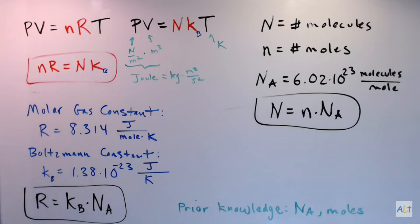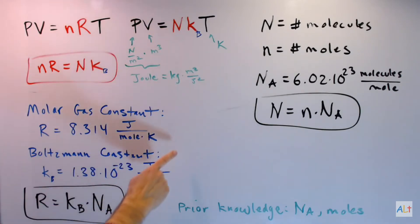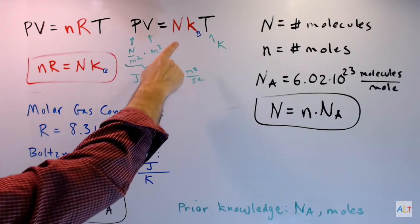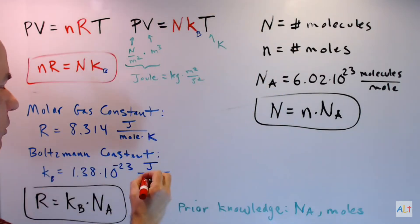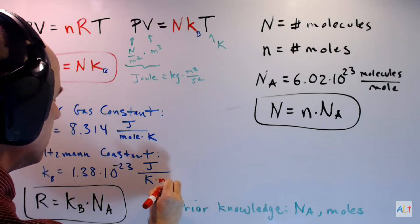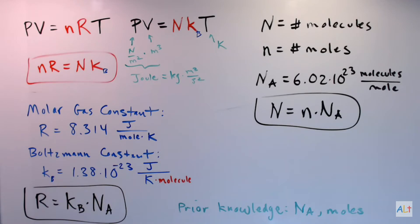But what about the Boltzmann constant? You can see you have joules and kelvins just like before with the molar gas constant. But what's going on with N? N is measured in molecules. So shouldn't this say molecules right down there? I think so.